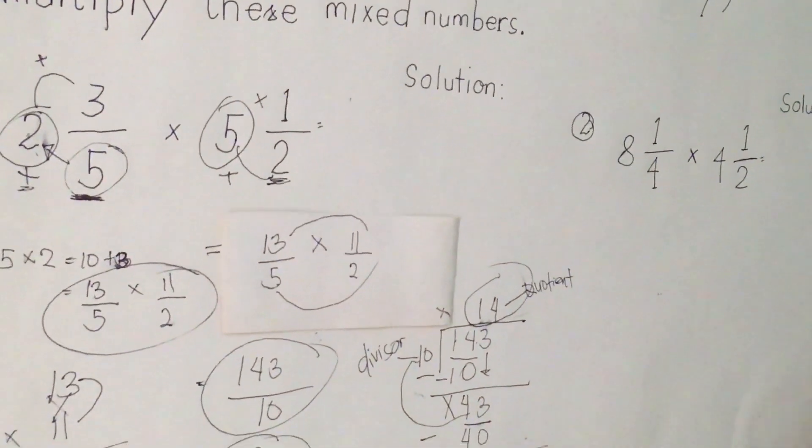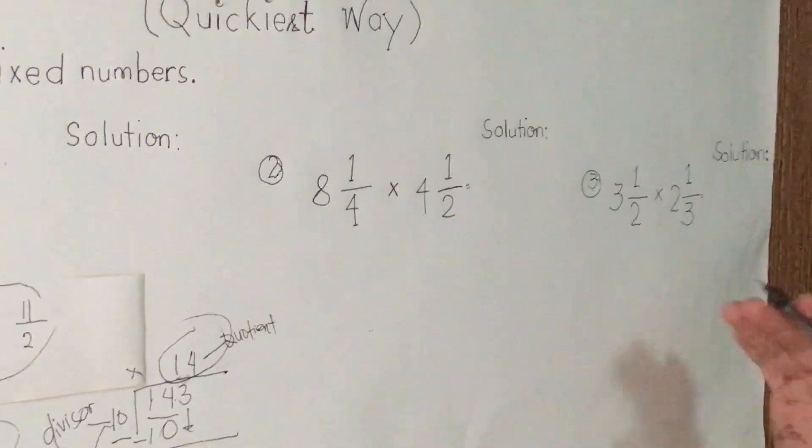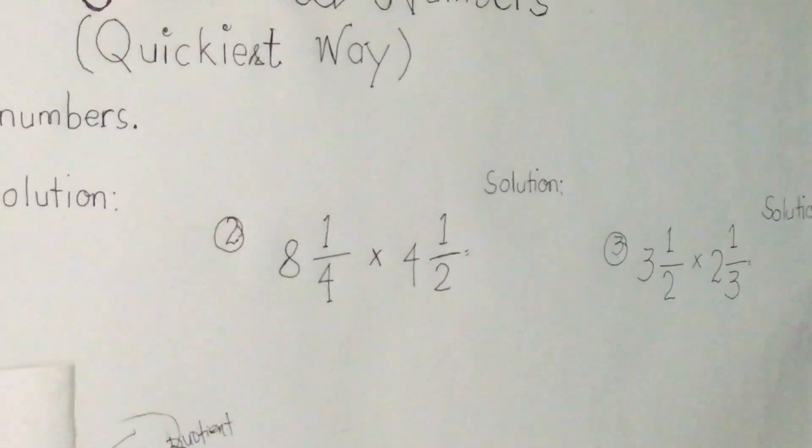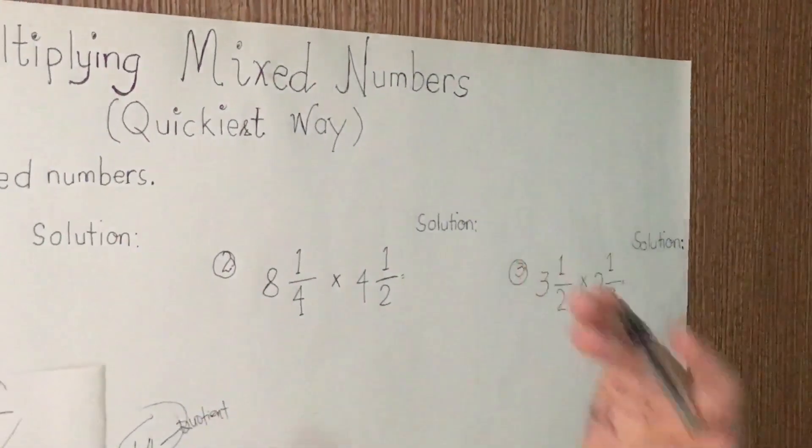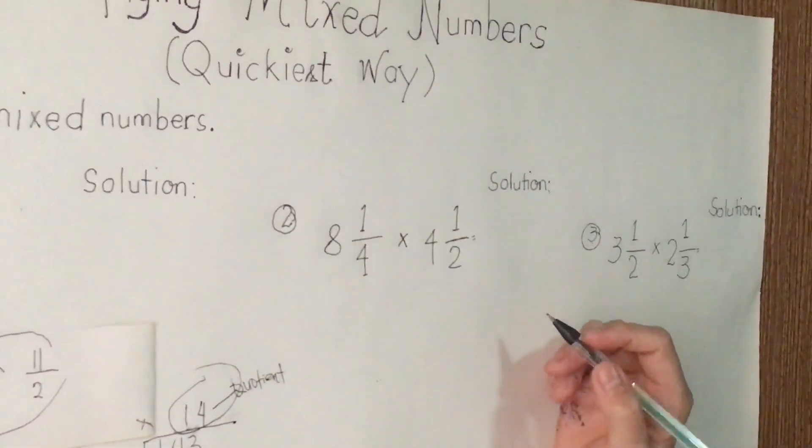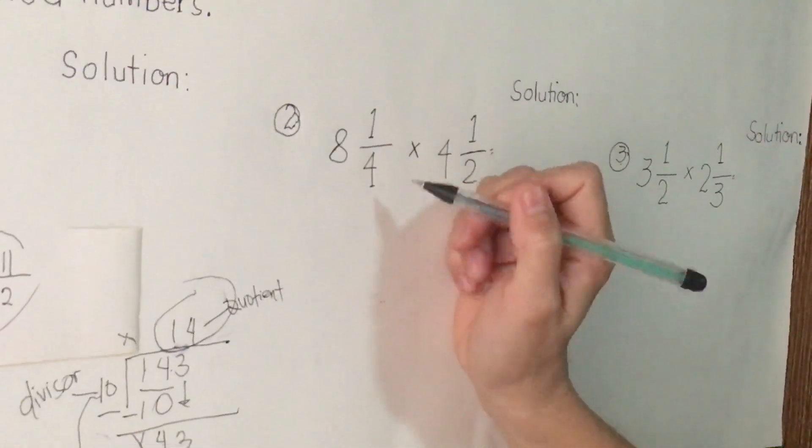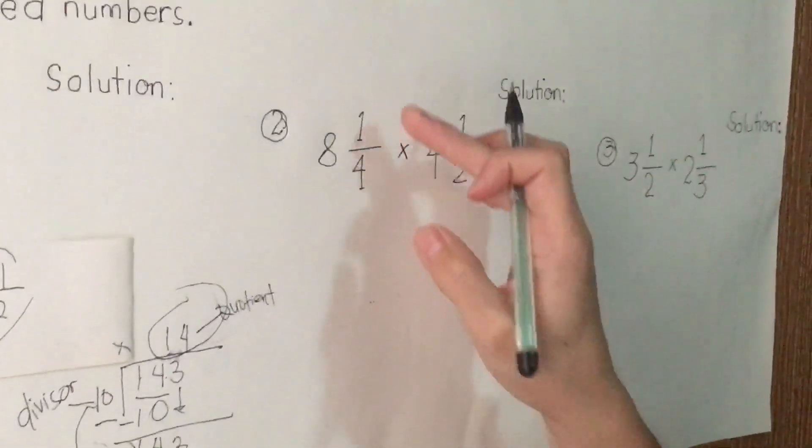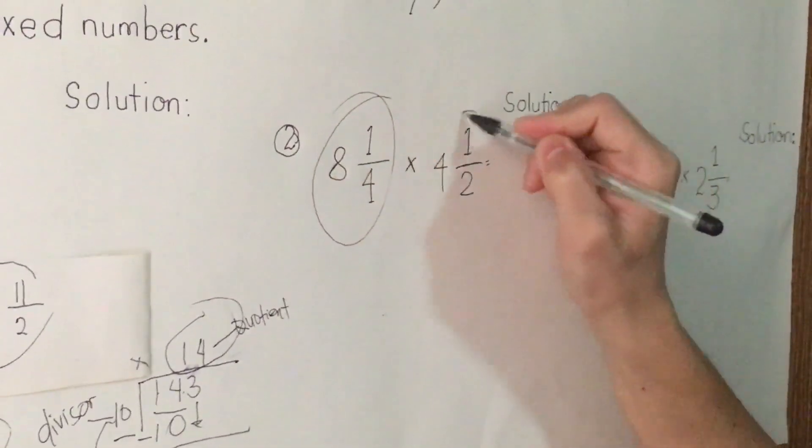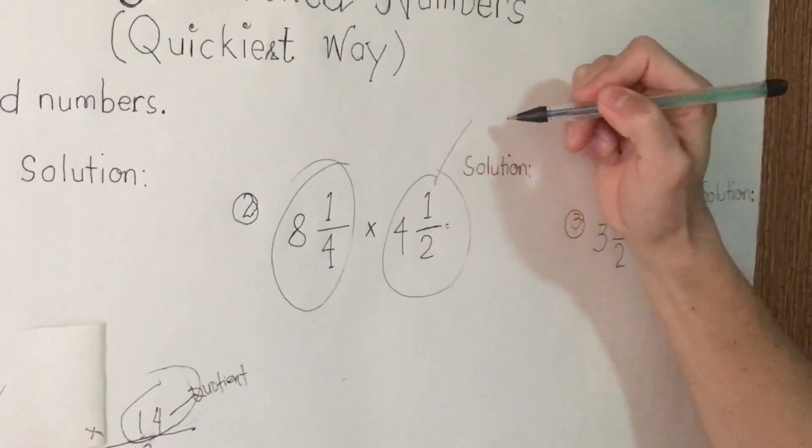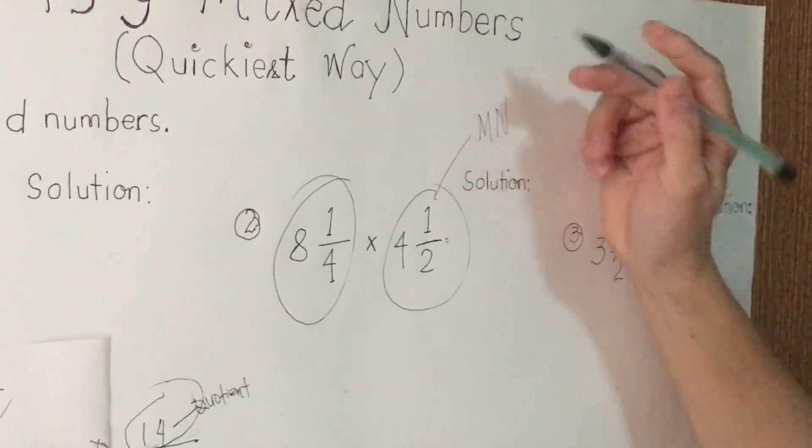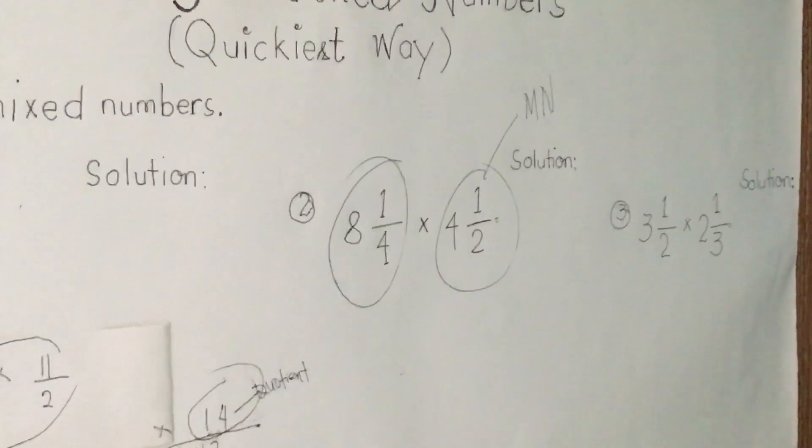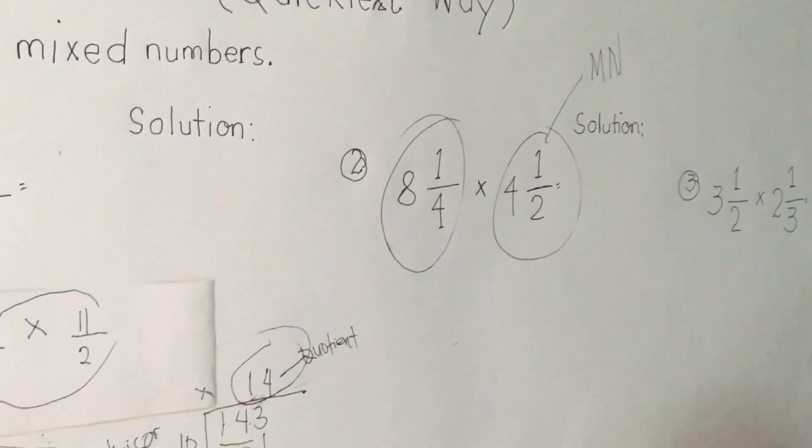The next is, we have, choose, it's either 2 or 3. So we can choose, it's either 2 or 3. So I'm going to proceed to number 2. We are going to direct. Again, I'm going to see it. If you also remember, we are going to convert here because it will be what we call mixed number.